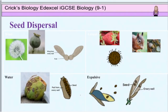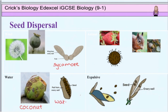Another example of wind dispersal is the sycamore helicopter, which has wings. Plants that produce wind-blown seeds often produce lots of them to ensure that some are blown to areas where they can germinate. Some will get eaten and some will land in places that are not a suitable habitat. Many plants that live near or in water have seeds that can float and so they are carried by water to new habitats. Some are very large seeds like coconuts, and some are smaller like the water iris.